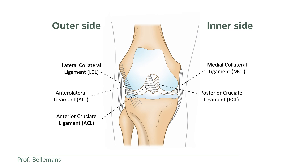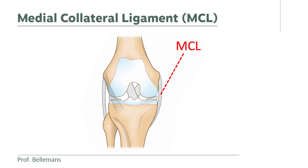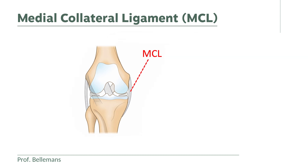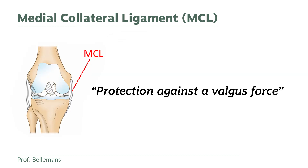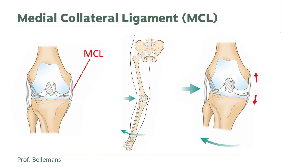Each of these ligaments has a distinct function. The MCL protects the knee against what we call a valgus force — a force that drives the knee into an X position. Like, for example, a blow on the outside of the knee, or a tackle onto the inner side of the lower leg.